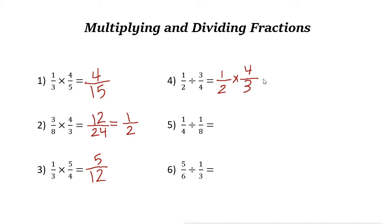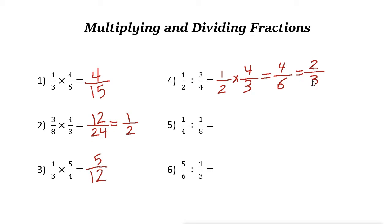Now multiplying the two fractions is easy. Multiply the numerators: 1 times 4 is 4. Multiply the denominators: 2 times 3 is 6. Both are even numbers, so simplify: 4 divided by 2 is 2, and 6 divided by 2 is 3. The answer is 2/3.